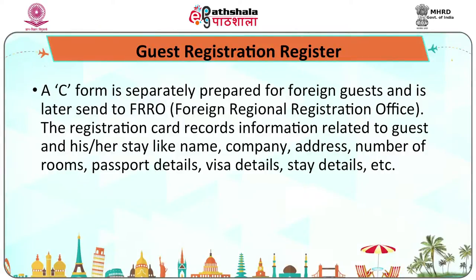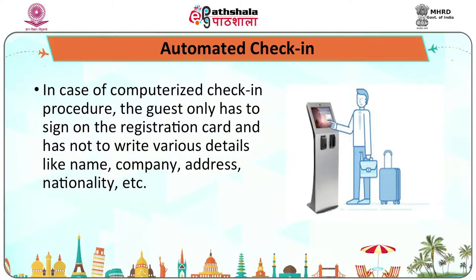The C form is separately filled for foreign guests and is later sent to the FRRO office — the Foreign Regional Registration Office. The registration card records information related to the guest such as name, company, address, number of rooms required, passport details, visa details, state details, etc. In case of computerized check-in, the guest only has to sign the registration card and need not write various details like name, company, address, nationality, etc., as the reservation record in electronic form can be converted into the guest registration card.